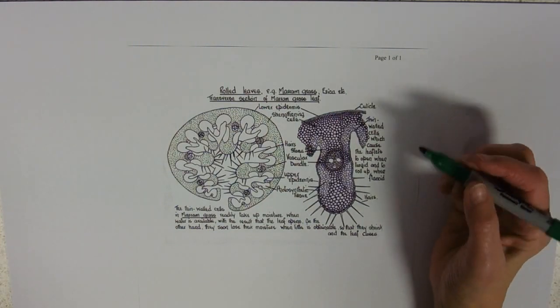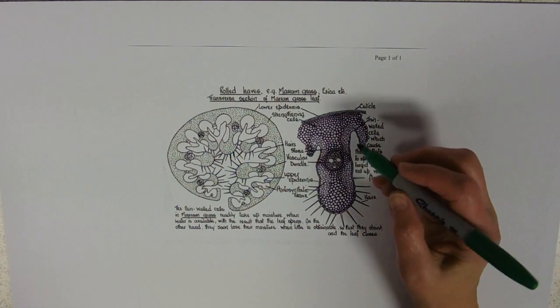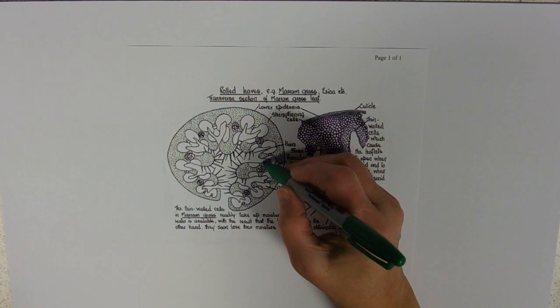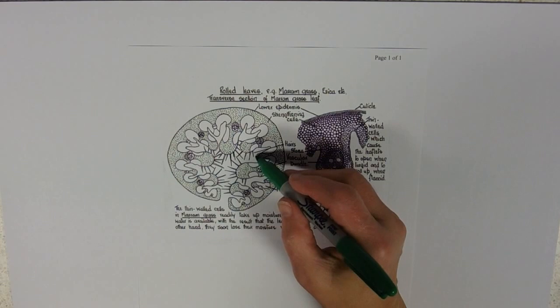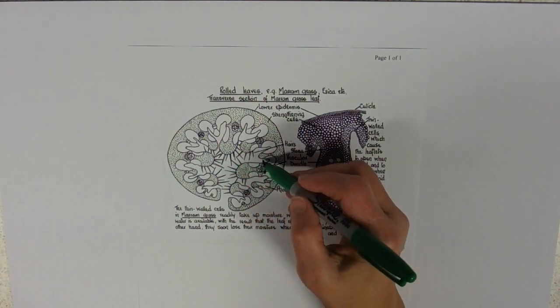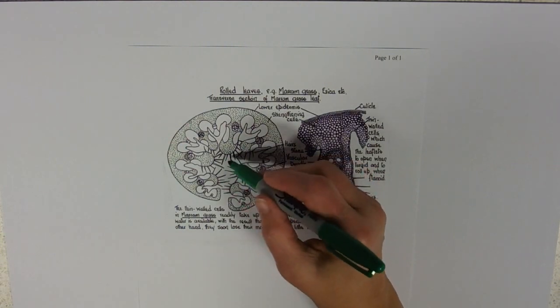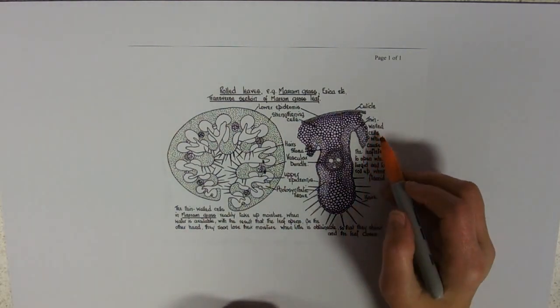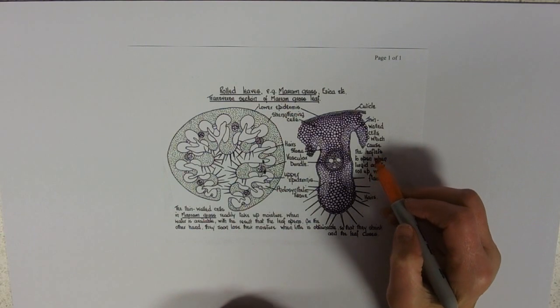If we look at where the stomata are, the stomata are kind of here down near the base. You might have a stomata there, a stomata there. And so the water vapor is going to be leaving but getting trapped in these grooves, trapped in the roll and further trapped by those trichomes. So it's really going to reduce the diffusion gradient.